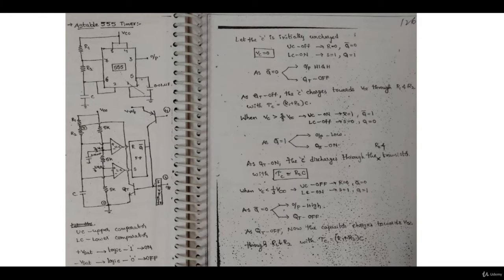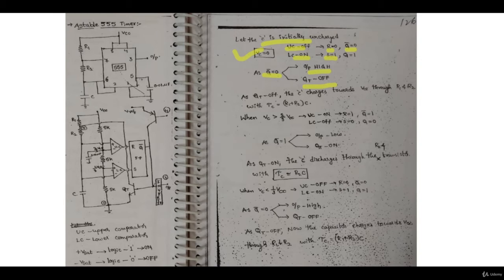Now let's see what changes in the working. Initially, let's say the capacitor is uncharged, meaning Vc will be zero. The upper comparator will be off, lower comparator will be on, meaning R will be zero and S will be one, which will give Q-bar equal to zero.